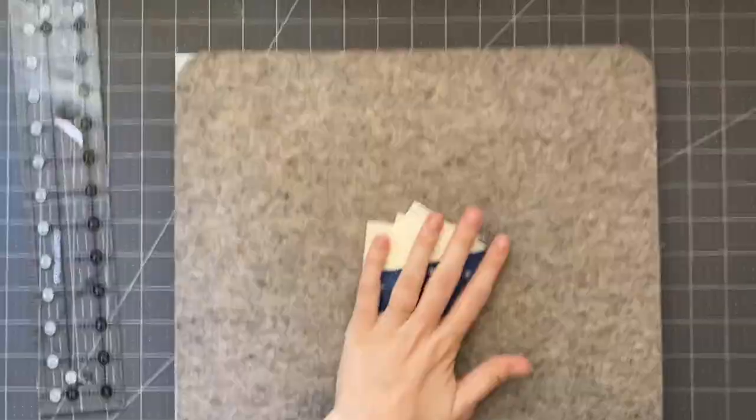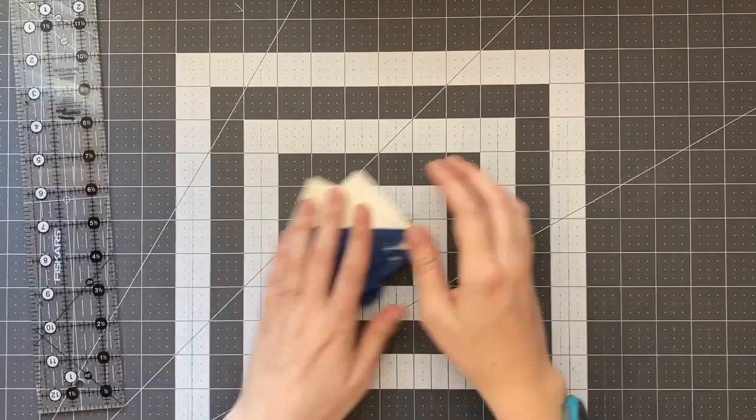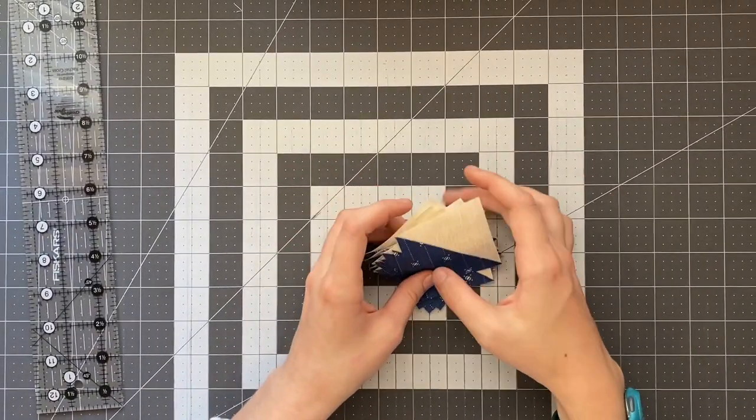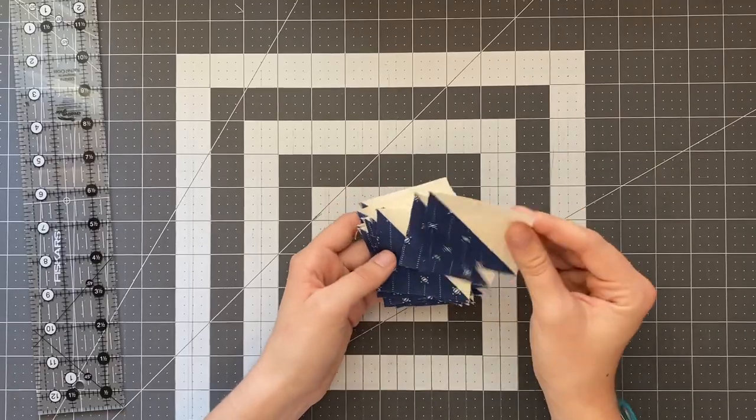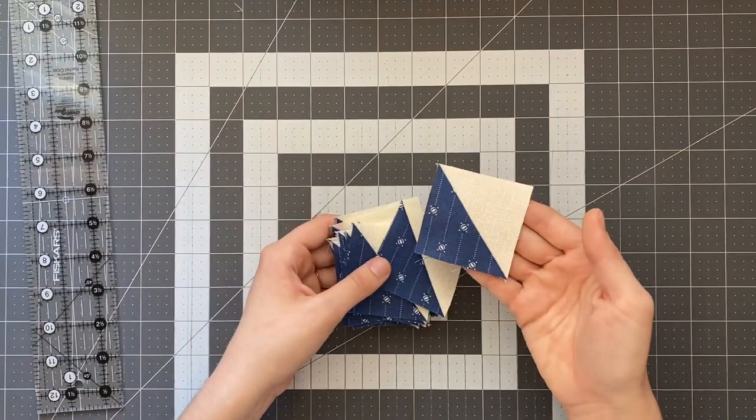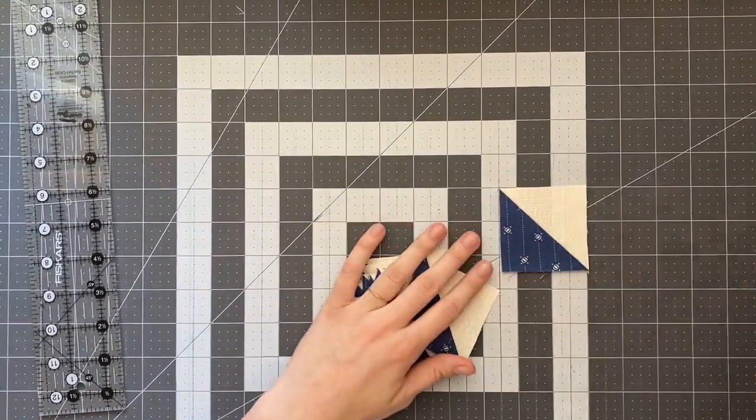And there we have our ironed half square triangles each paper for recipe number three makes 18 two and a half inch half square triangles which means these will finish to a two inch half square triangle now we can go ahead and look at our cover here at all the different design options that they've laid out.